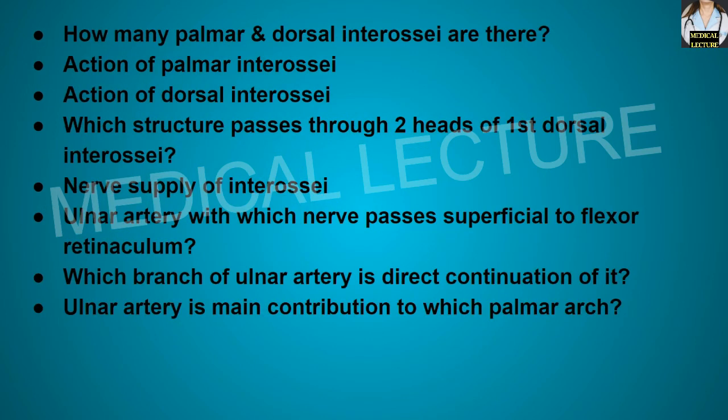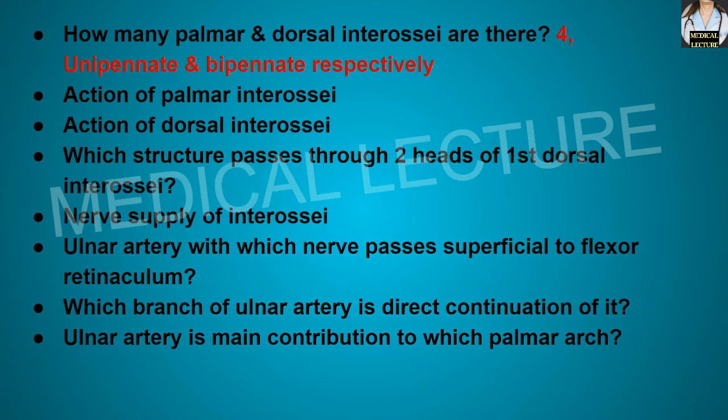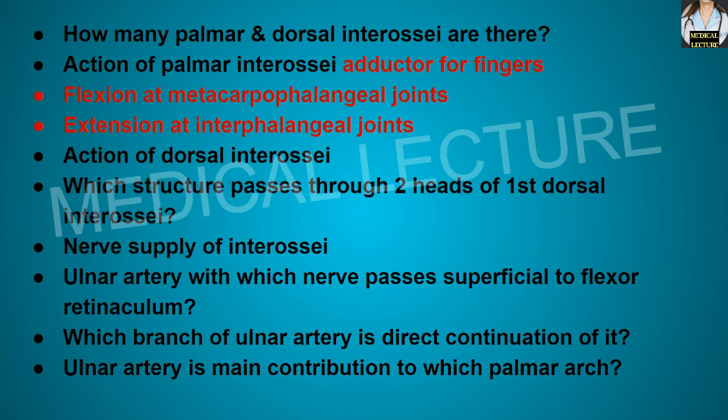How many palmar and dorsal interossei are there? There are four palmar and four dorsal interossei. The palmar interossei are unipennate while the dorsal interossei are bipennate. What is the action of the palmar interossei? Palmar interossei adduct the fingers. They also cause flexion at the metacarpophalangeal joint and extension at the interphalangeal joint. What is the action of the dorsal interossei? They abduct the fingers.